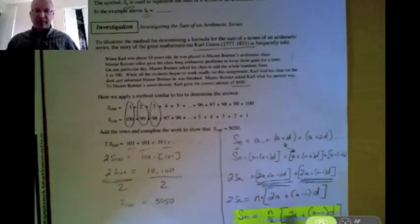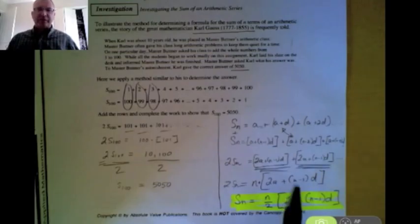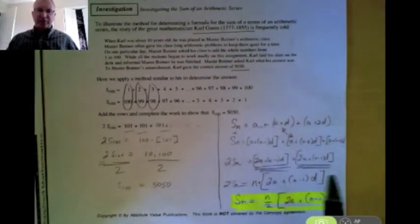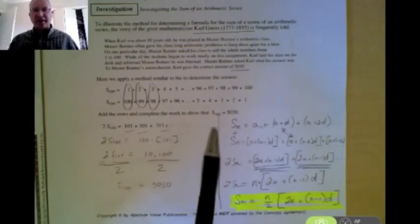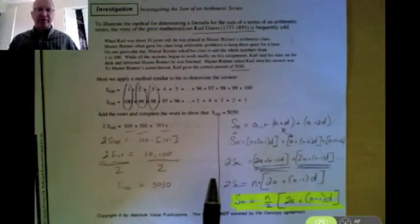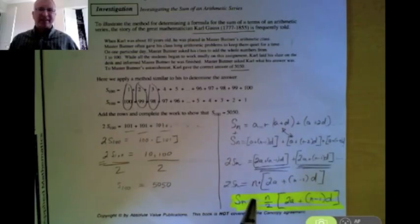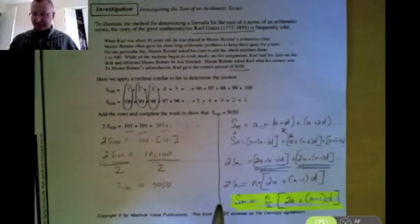So once you know the number of terms, the first term and the common difference, you can plug those into this formula. Some of you are sitting there going, Mr. Kaminsky, you just blew my mind like how you came up with this formula. Well one of the things they asked me to do when I teach you is to show how this formula was derived. Am I ever going to ask that of you on a quiz or a test? No, really what I want you to be able to do is use this particular formula to solve problems. But it's kind of nice to know how they did come up with the formula.